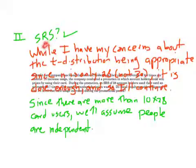Checking our conditions. It's an SRS. I wrote this in red because I do have some concerns about the t-distribution being appropriate. Our sample size is only 28. That's not 30 or 40, and we don't really have the data, so we have no way of making a box plot. It might be plausible that the distribution of people using their credit card is somewhat skewed. I do have some concerns about the t-distribution being appropriate, but I'll just continue. Since there are more than 10 times 28 users, we'll assume that people who use their credit cards are independent of each other.